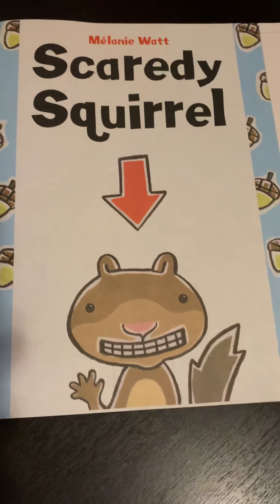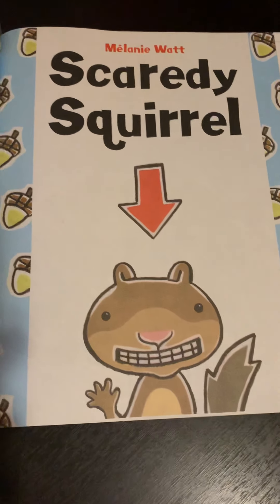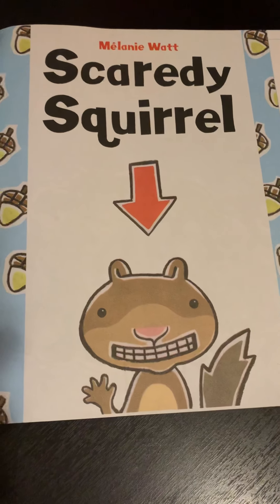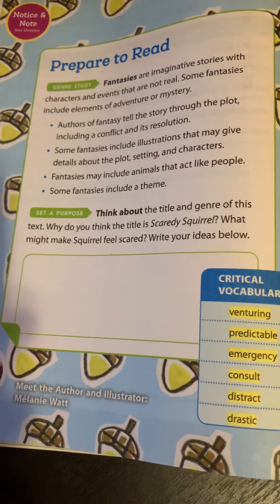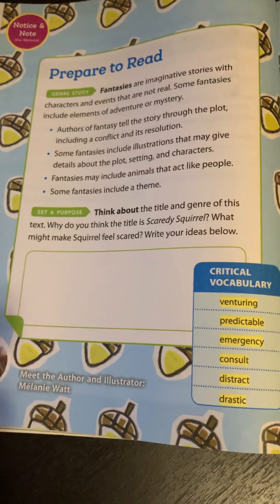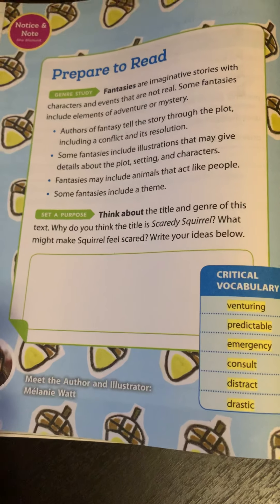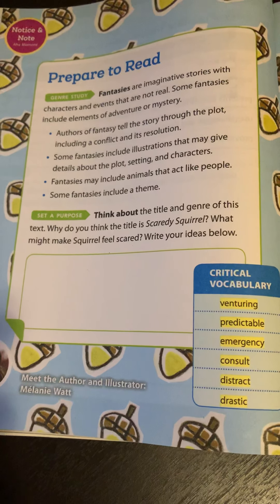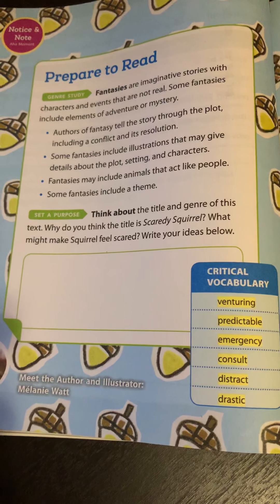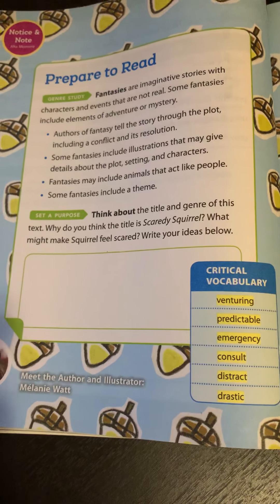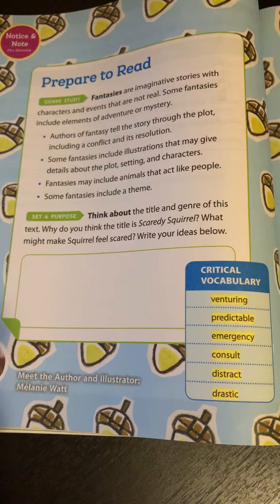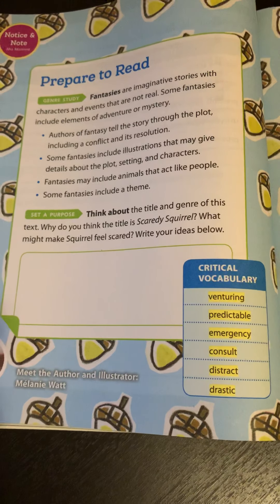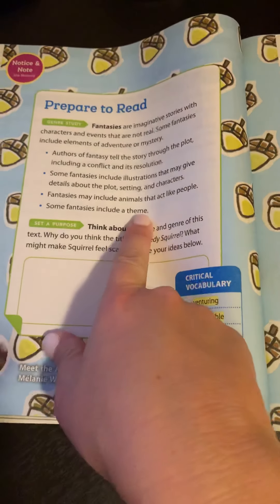This week's story is written by Melanie Watt and it's called Scaredy Squirrel. As we prepare to read this week, we're going to be reading a fantasy instead of realistic fiction. Our last two stories were realistic fiction. Authors of fantasy tell the story through the plot, including a conflict and a resolution. They have illustrations that give details about the plot and the setting. Fantasies may include animals that act like people and they also include a theme.